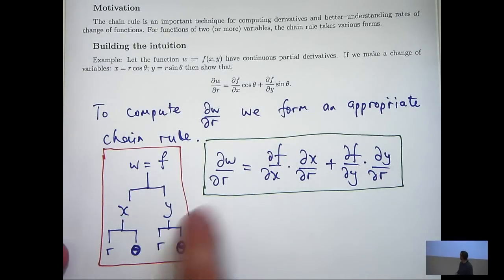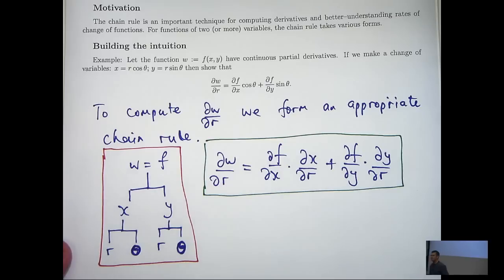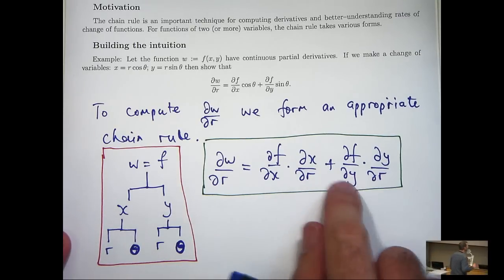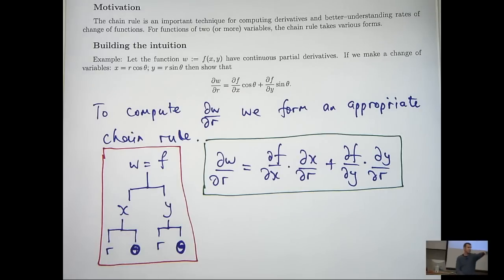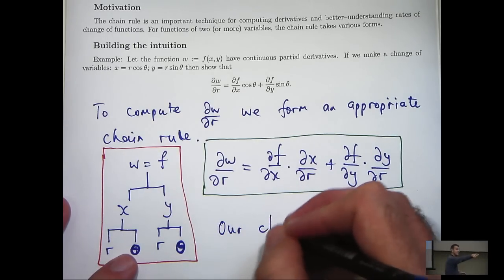Okay. So that is my general chain rule for dw/dr. Now, I could also form a chain rule for dw d theta. I would go down all the paths leading to a theta. But that is not what we need here.